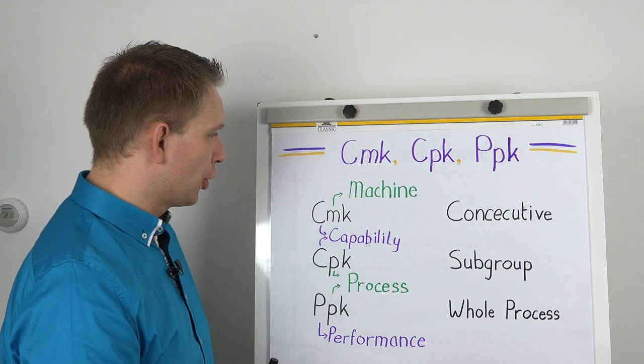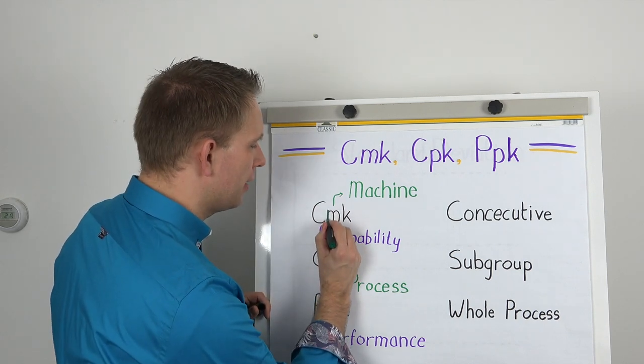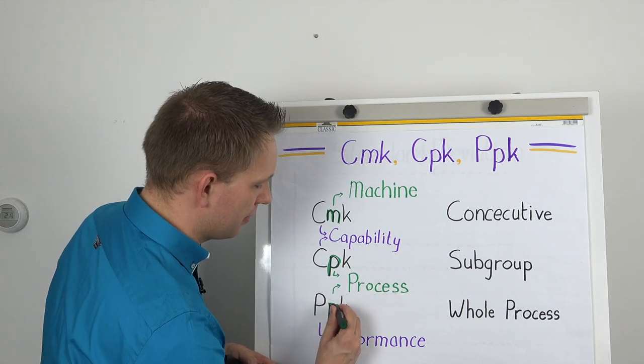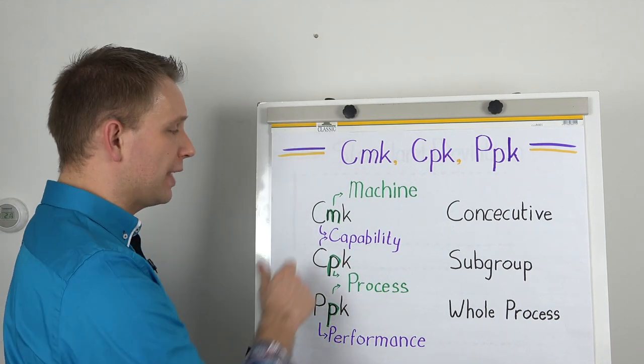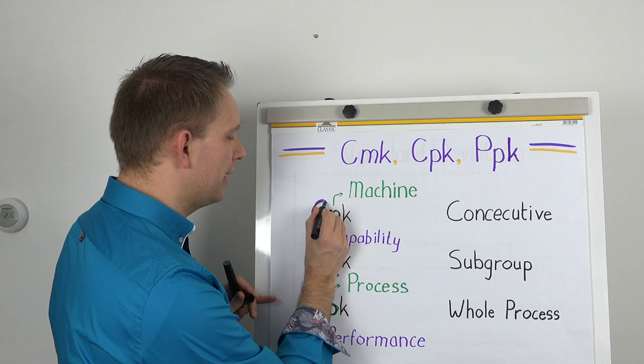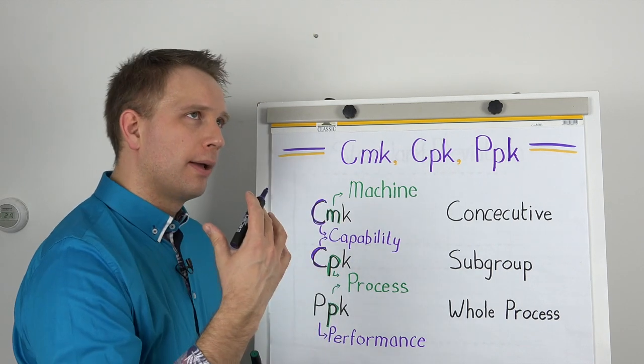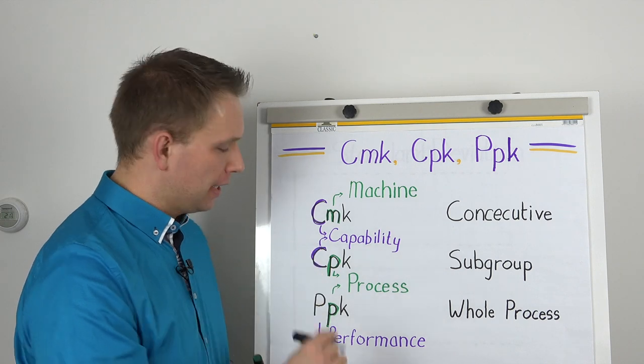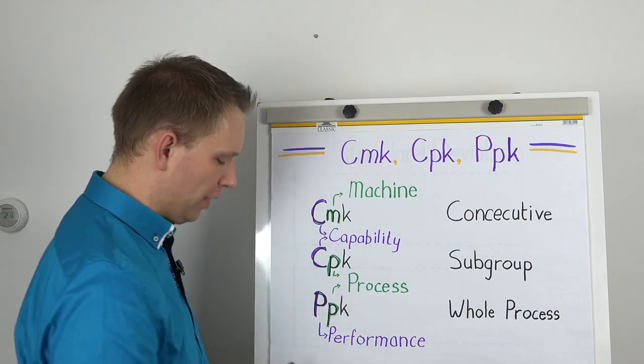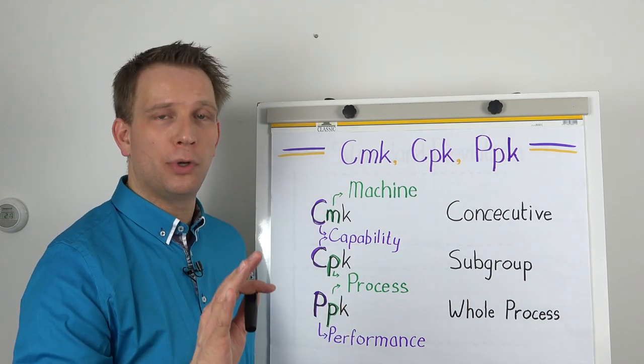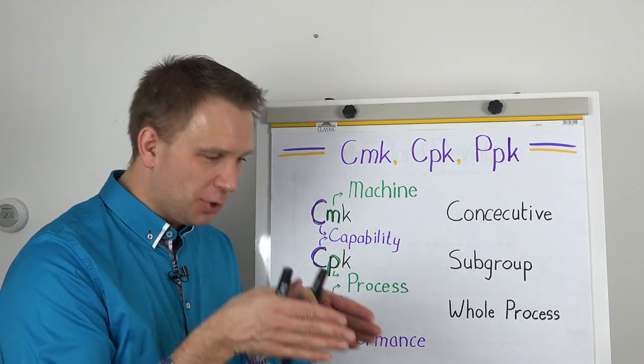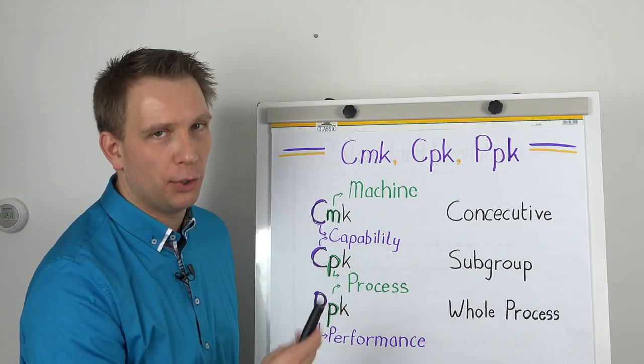Now to go over it again, we have the machine capability versus process. And the first letter will show you if we are doing a capability thing. So capability talks about what can it do? Or do we want the actual performance that we see when we just let it run? Performance takes into account all the factors you have in practice. Capability takes into account as little as possible. So we really want to focus on either the machine or one whole process.